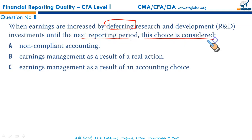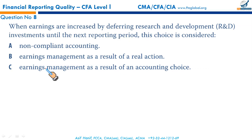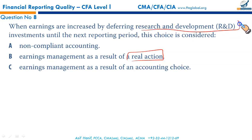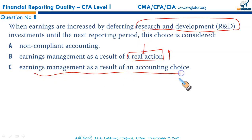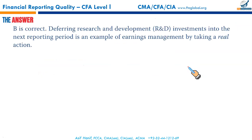Until the next reporting period, this deferral choice is not non-compliant accounting — no accounting violation has happened. Deferring is purely a management action; you can delay an expenditure, it is perfectly fine. This is a real management action to show favorable results this year because expenses have been delayed — the current year result will look good. So this is earnings management as a result of a real action, not an accounting choice. B is the correct option.